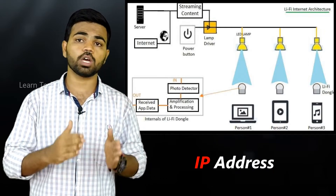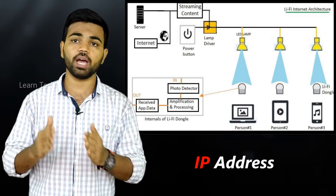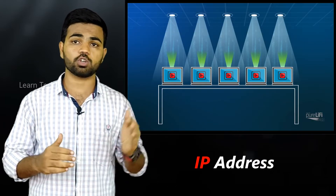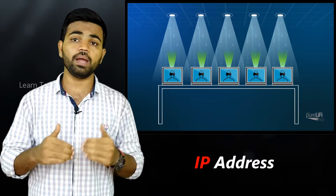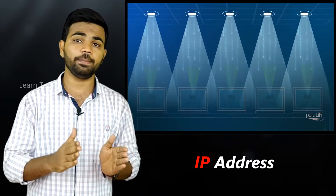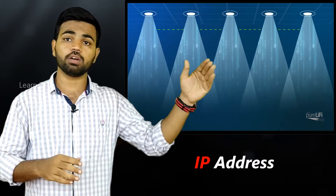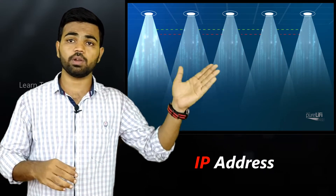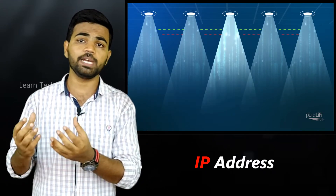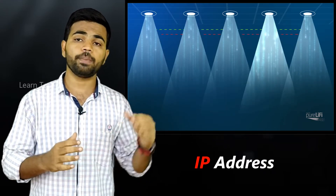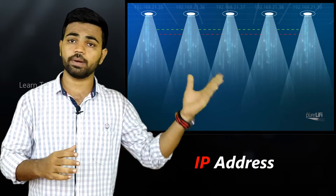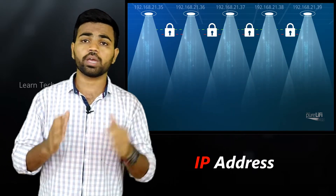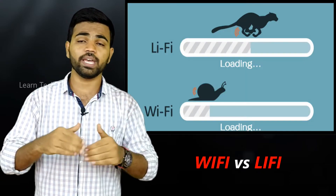If you use the internet, you can use the internet service provider and then get an IP address. We use a live-in internet address — how to assign the IP address. A LAN driver with a public IP address is assigned by the internet service provider. A LAN driver with a private IP address is also assigned. Now, Li-Fi — this is the main thing.